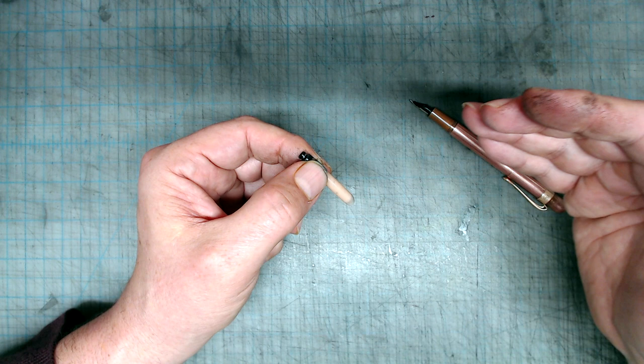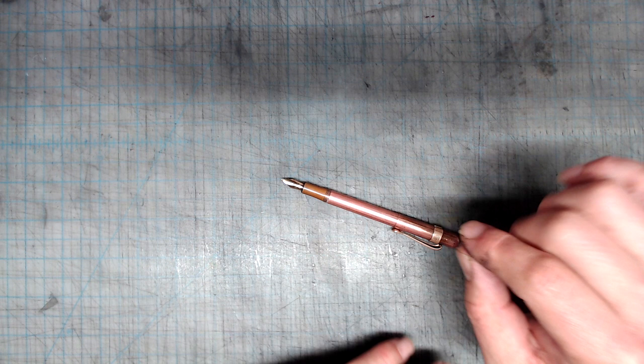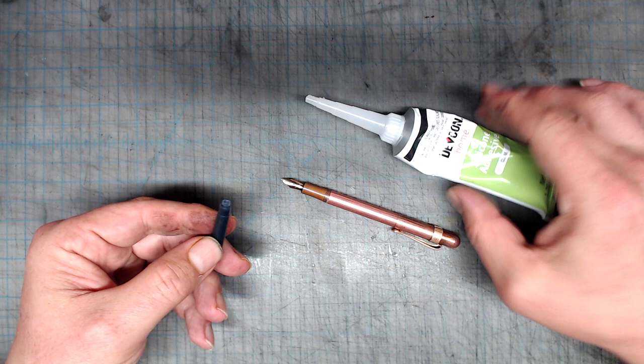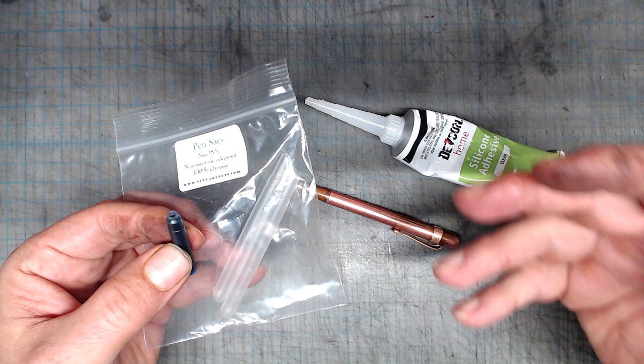I'm happy to report that there's a relatively simple solution that is similar to the one I used in the Kaweco Sport. If you haven't seen my review of that pen, I took a short international cartridge, cut it off right about here, and then, using silicone adhesive, glued a silicone sac to the back, essentially creating a squeeze converter that holds quite a bit of ink.